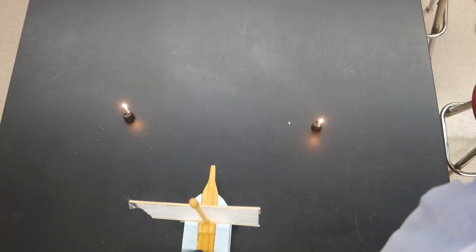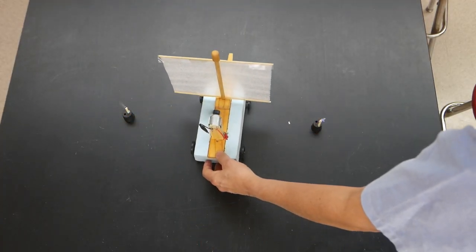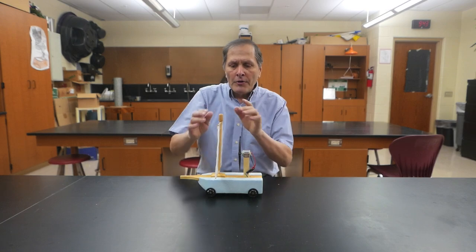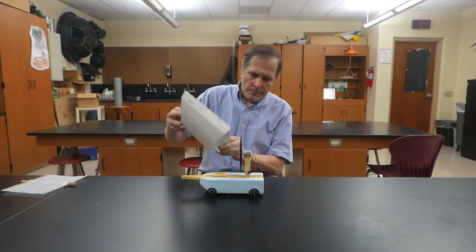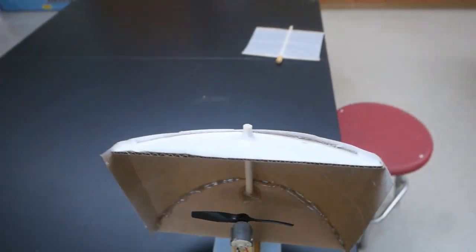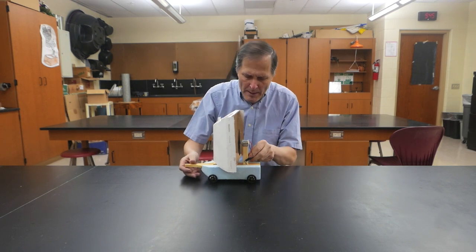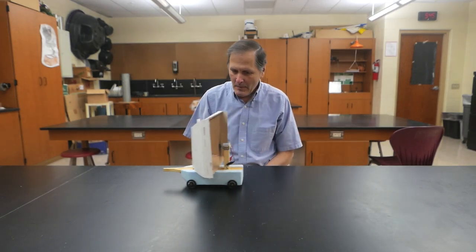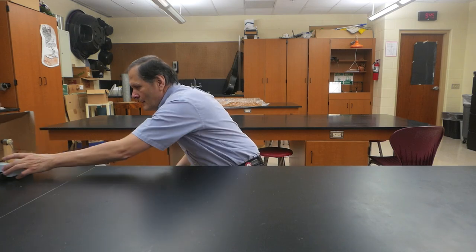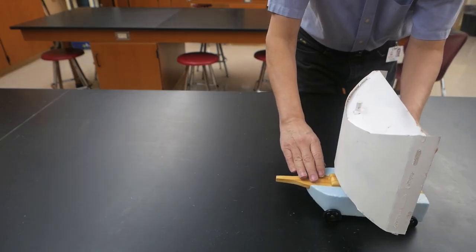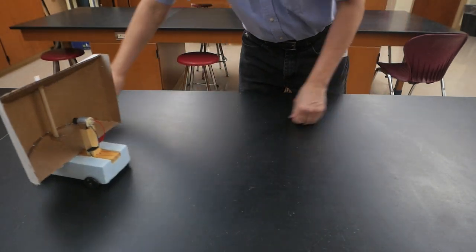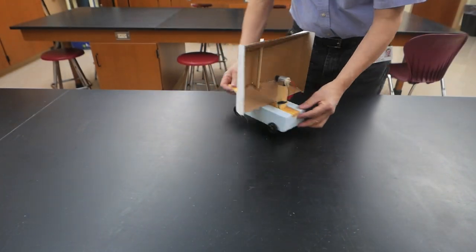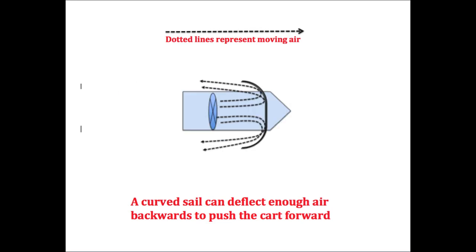I have two lit candles sitting on the table. When the cart moves to the right position, the fan blows them out. This is telling us that the air doesn't stop at the sail — it's merely deflected to the side. So I'm going to replace this sail with one that I made out of cardboard. Here's a closer look at it. The rounded shape is able to channel enough air backwards to be able to push the cart forward.